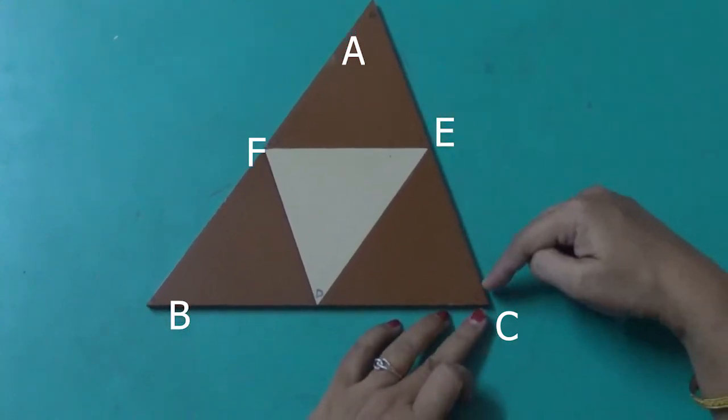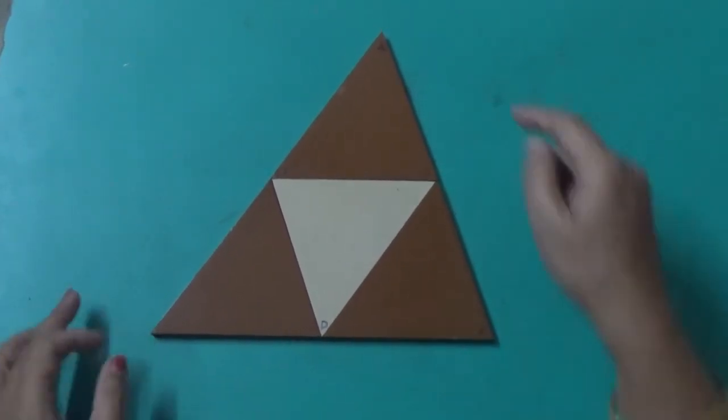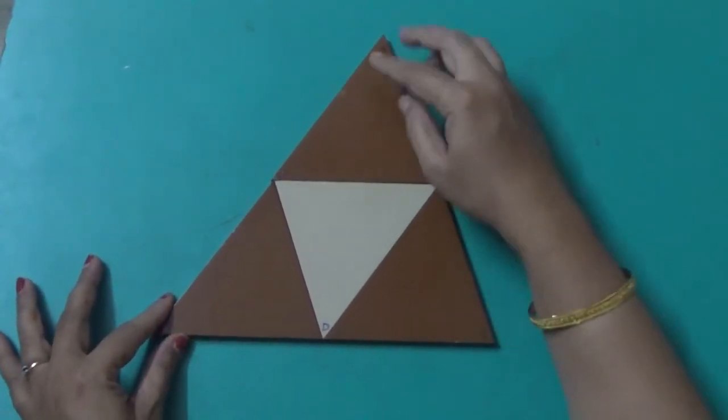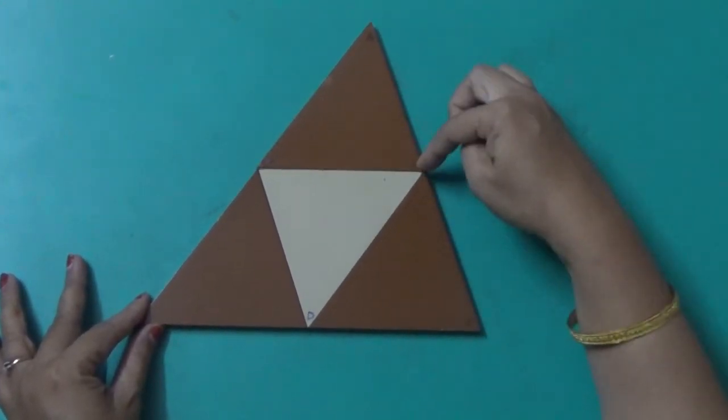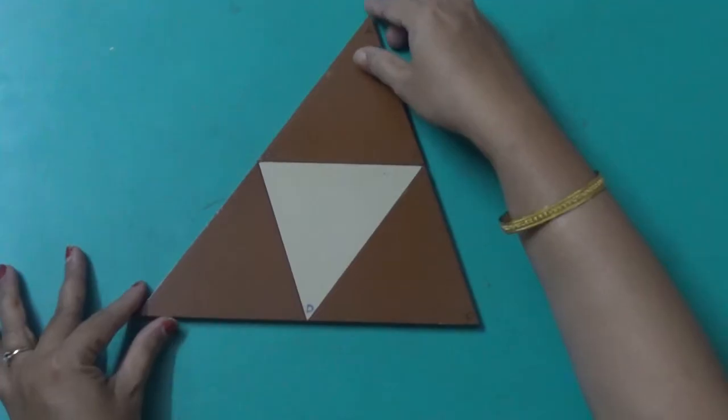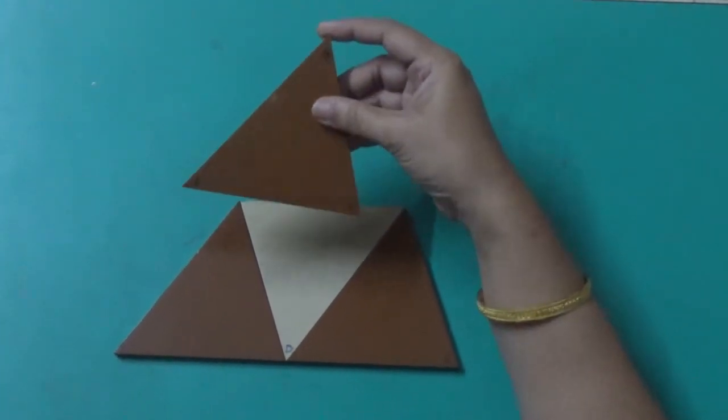Now if we join these two midpoints EF and cut along this line segment, then we get two pieces. If we place this piece here, then what is the observation? These two triangles are congruent.